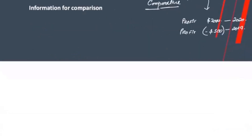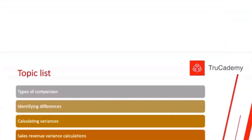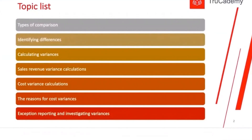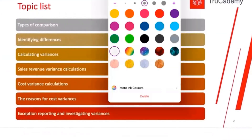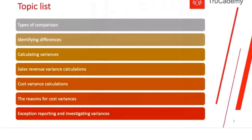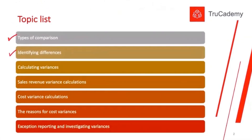The topic list for this chapter: first, types of comparison — what are the different ways we can compare information. Second, identifying differences — how we can find out if there are any differences. Third, variances — how we can calculate a variance and what a variance basically is.